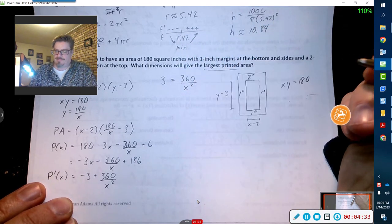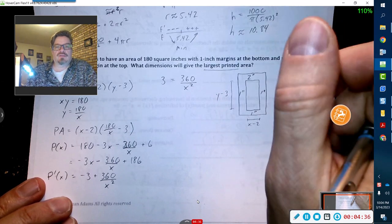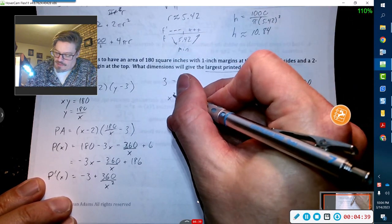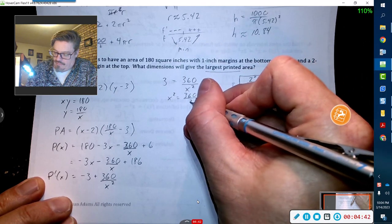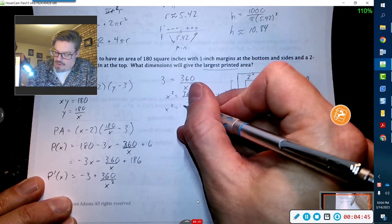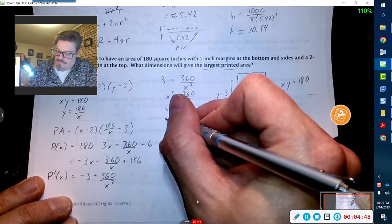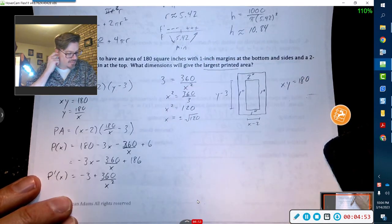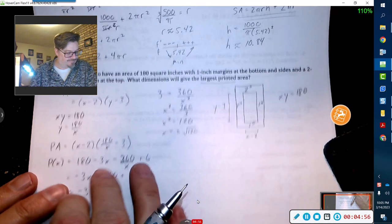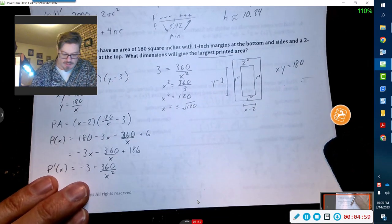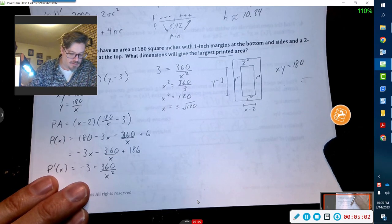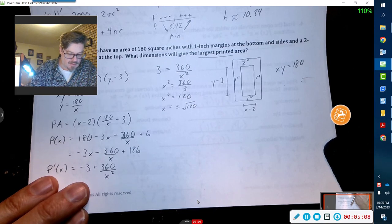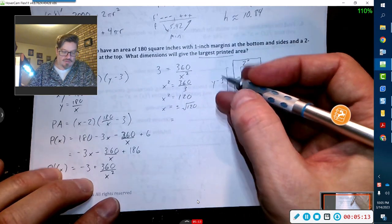Set that equal to zero. Now 3 goes over to the other side, and I get 360 over x squared. So the x squared and the 3 will switch out: 360 divided by 3 is 120. Square root of 120 is about 10.95.